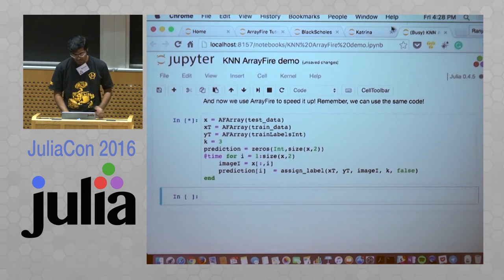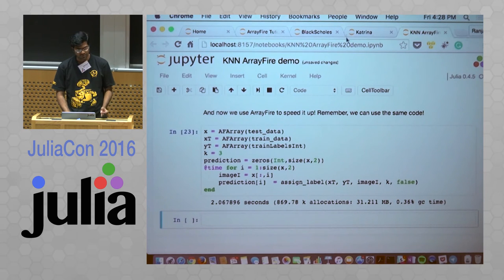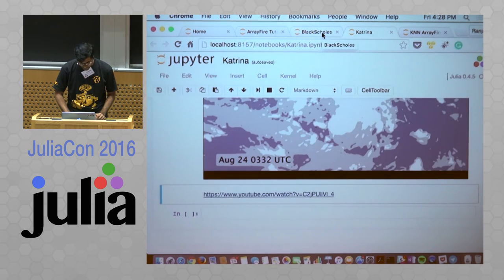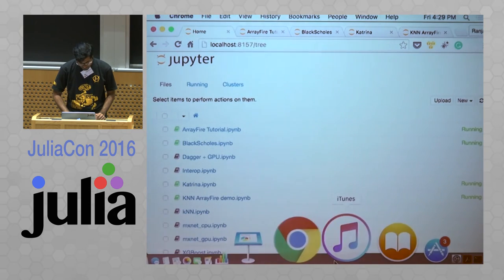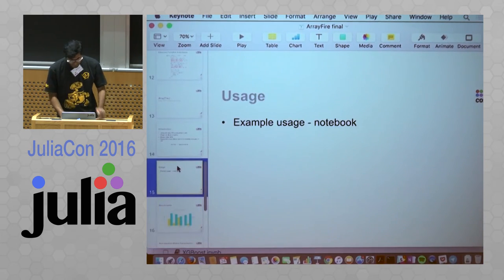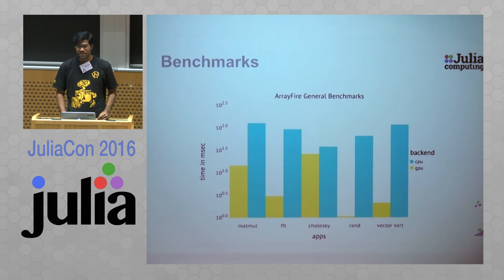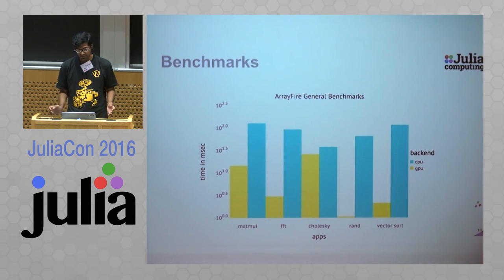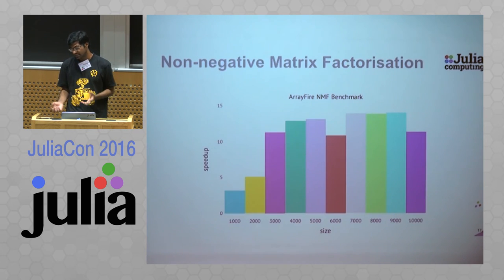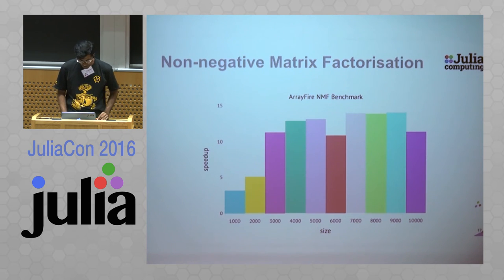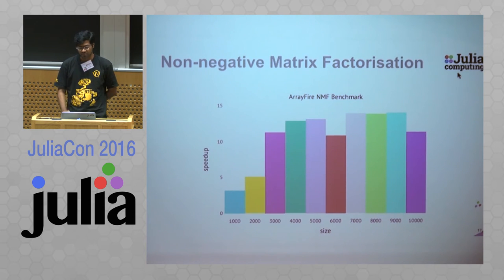That runs and gives you the answer. Let me show you some benchmarks I compiled — these are general ArrayFire benchmarks compared with normal standard Julia functions. I've also written a simple non-negative matrix factorization benchmark. Both examples can be found in the benchmark section of arrayfire.jl — please feel free to download and test them. I've measured single precision performance here because the GPU I'm using has very poor double precision performance.